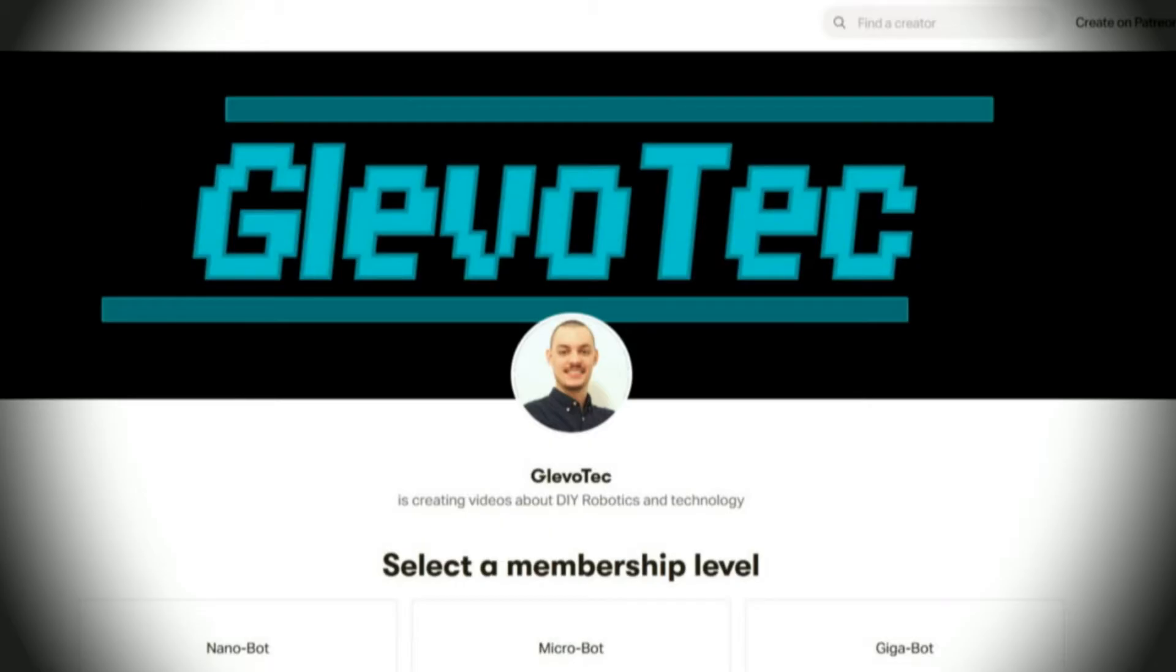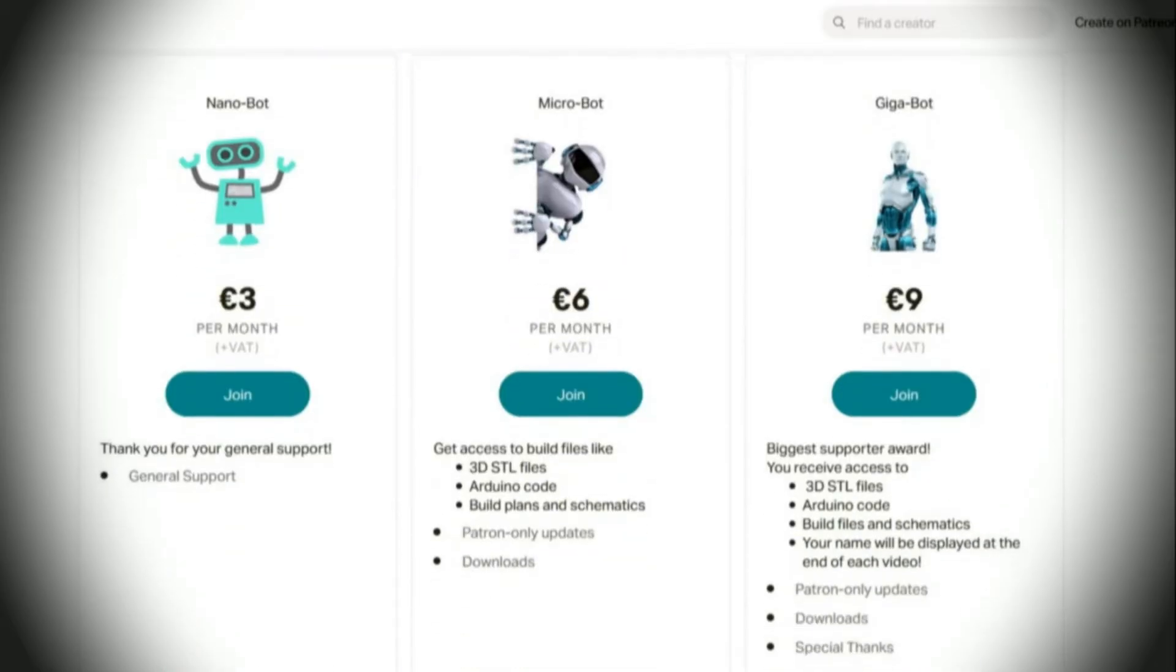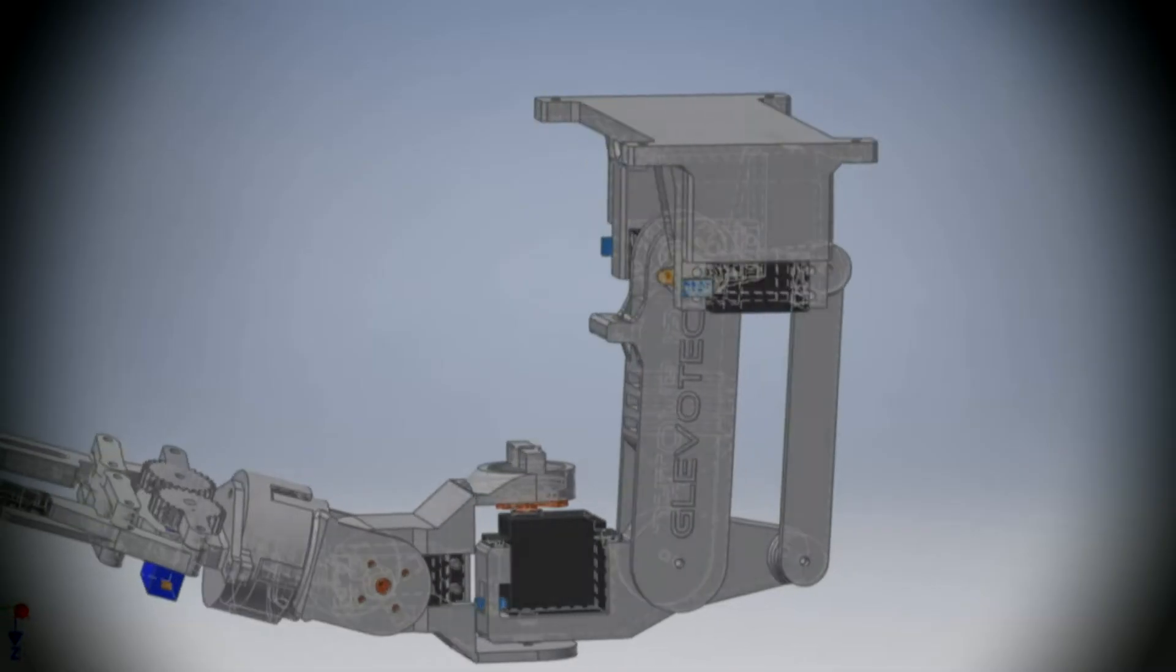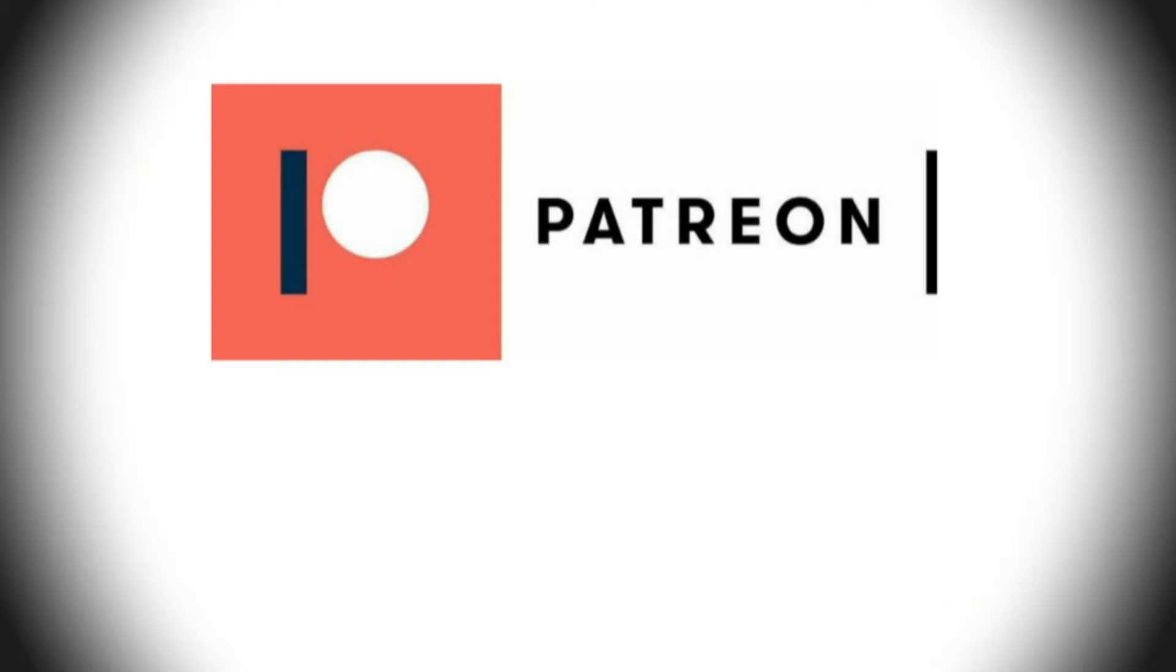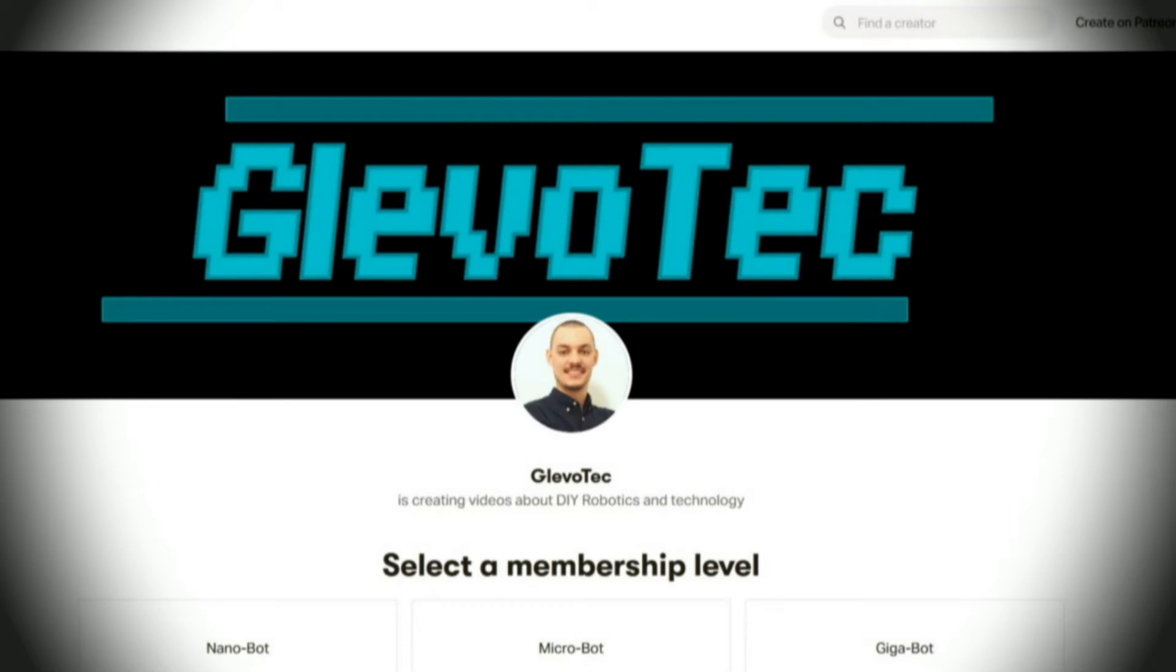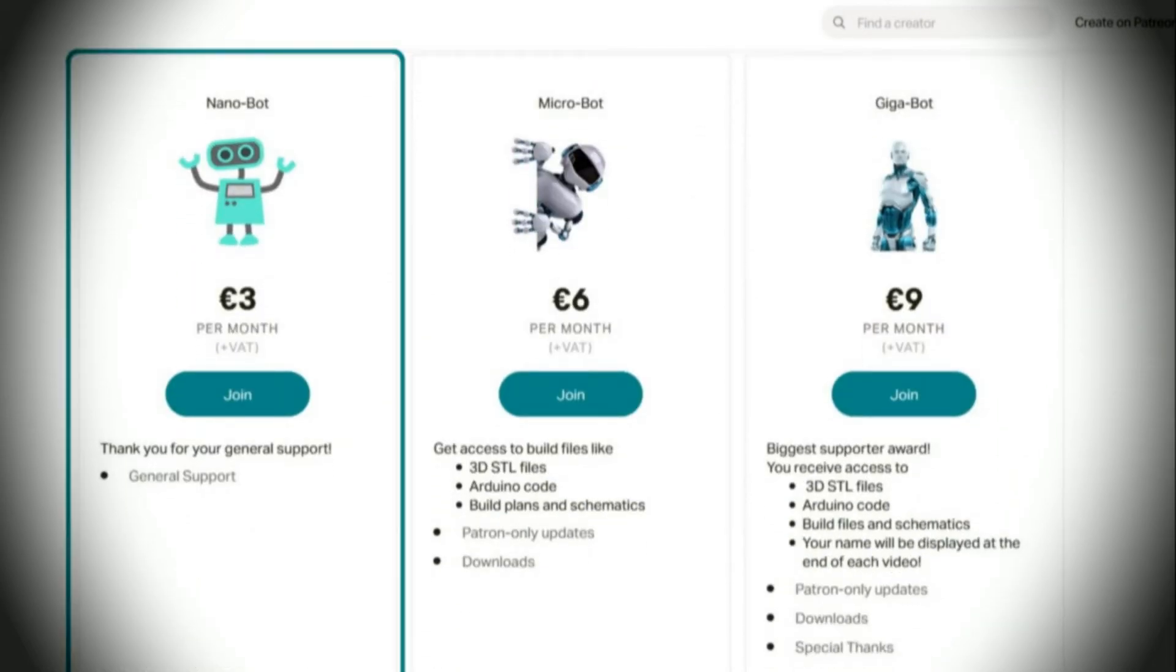If you want to build your own the 3D STL files and Arduino code are available for you. If you subscribe to my Patreon as a microbot or a gigabot you get exclusive access to all the STL files, Arduino code, schematics and more. Check the link in the description below. If you just like what I'm doing and want to help support my channel consider joining my Patreon as a nanobot to show your dedication.